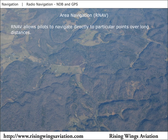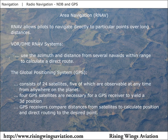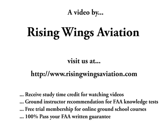Area navigation systems allow pilots to fly directly to particular points over long distances. Some RNAV systems use signals received from VOR DME transmitters and a processor to provide the pilot with a direct route to the selected point. The Global Positioning System, GPS, is now widely used for area navigation. GPS consists of 24 satellites, five of which are observable at any time from anywhere on the planet. Four satellites are necessary for a GPS receiver to yield a three-dimensional position. The GPS receiver compares distances from orbiting satellites to calculate the airplane's position, and the display allows for direct navigation to a specific point.